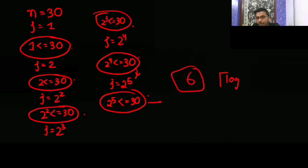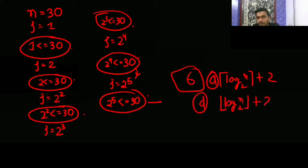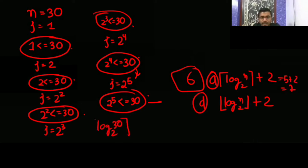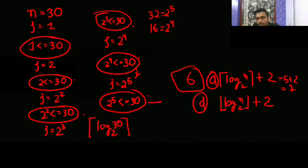Now if I take floor of log 30 base 2 plus 2: since 2^4=16 and 2^5=32, log2(30) is 4-point-something, so floor gives 4, and 4 plus 2 equals 6. If I take ceiling, log2(30) is 4-point-something, ceiling gives 5, and 5 plus 2 equals 7. We need 6, so the floor option D is correct.